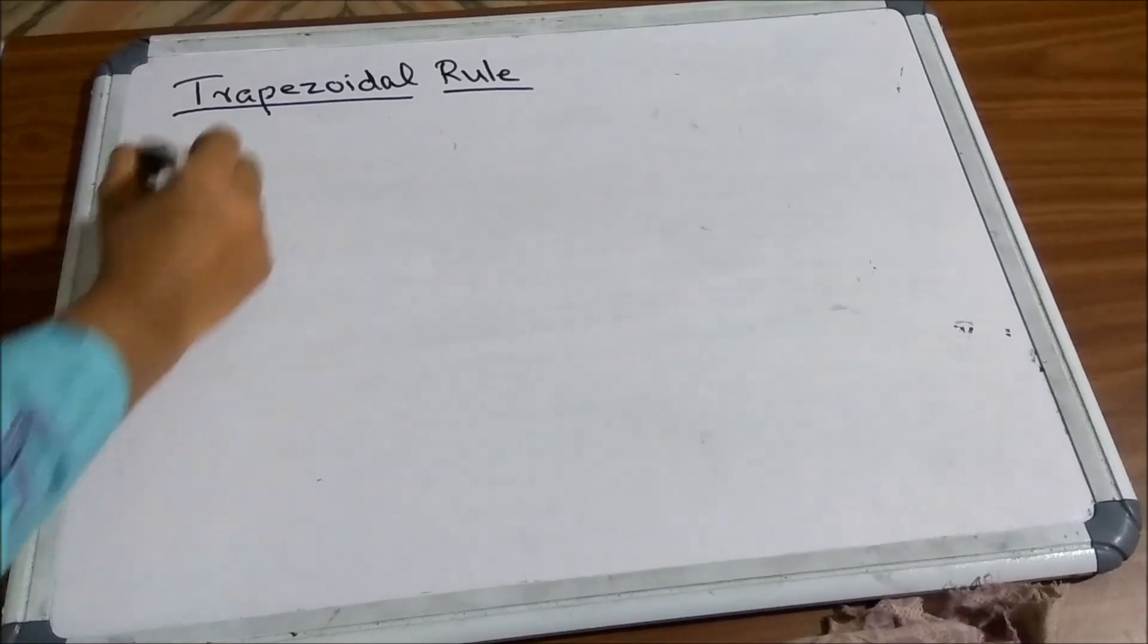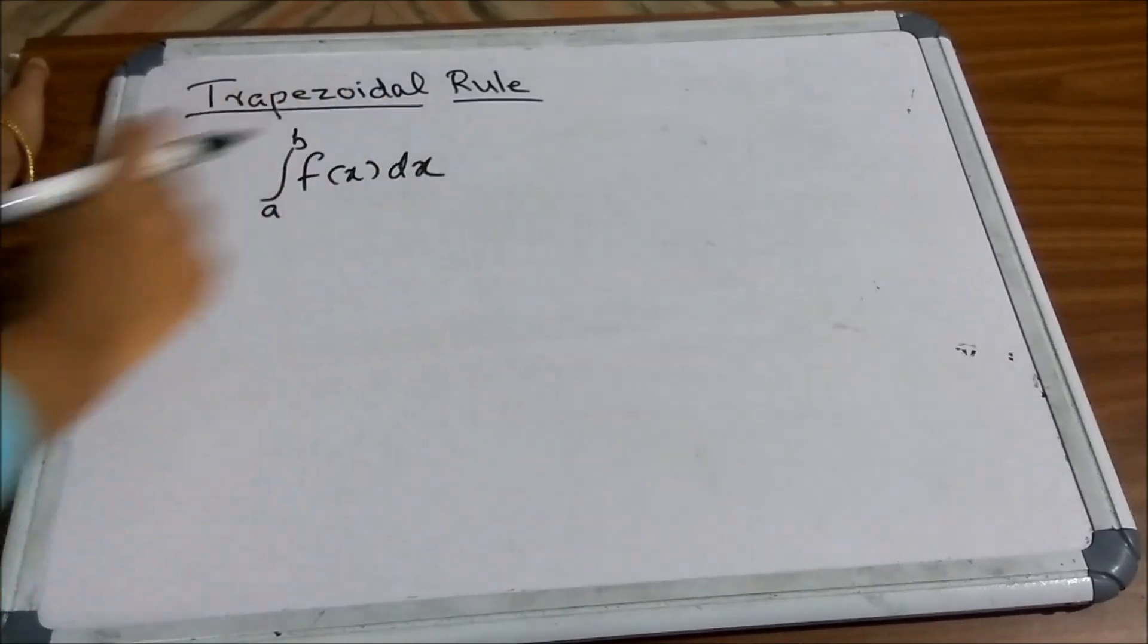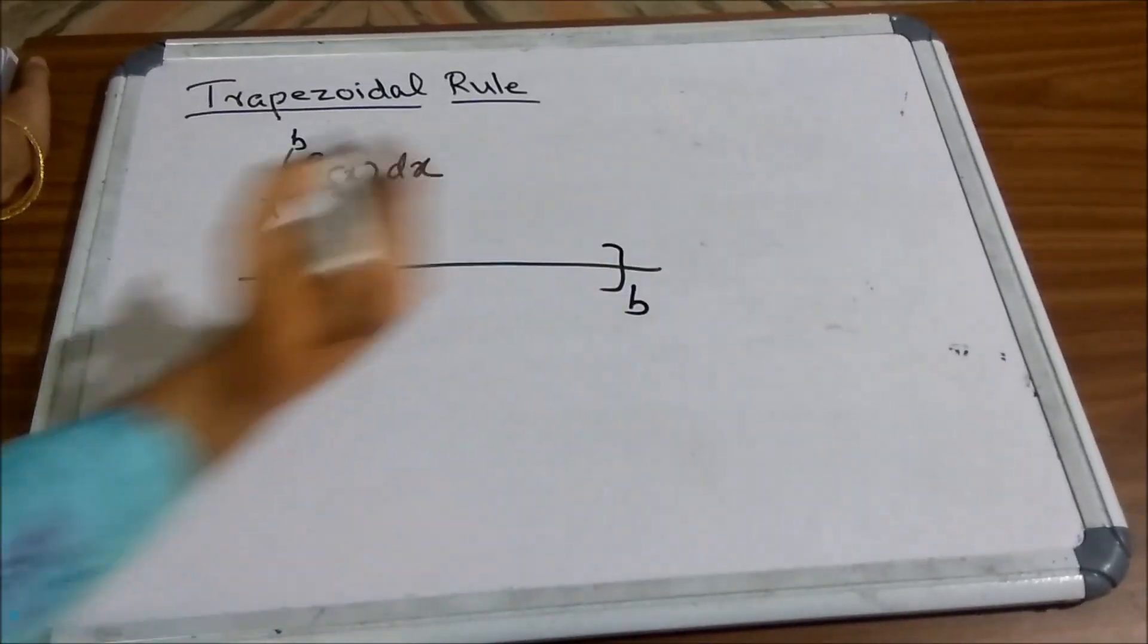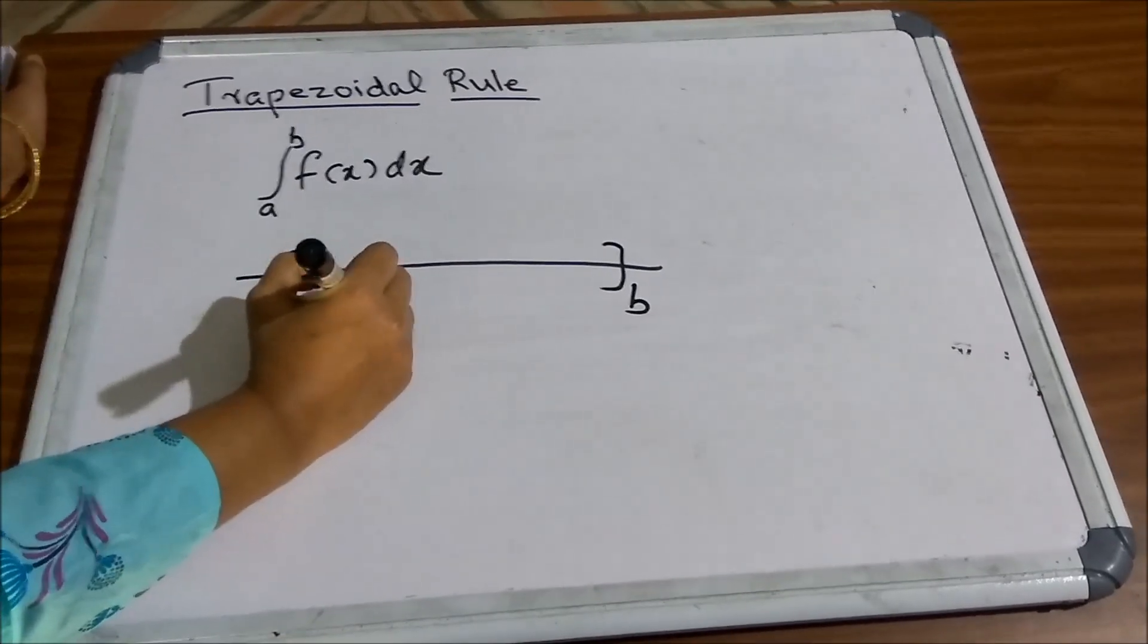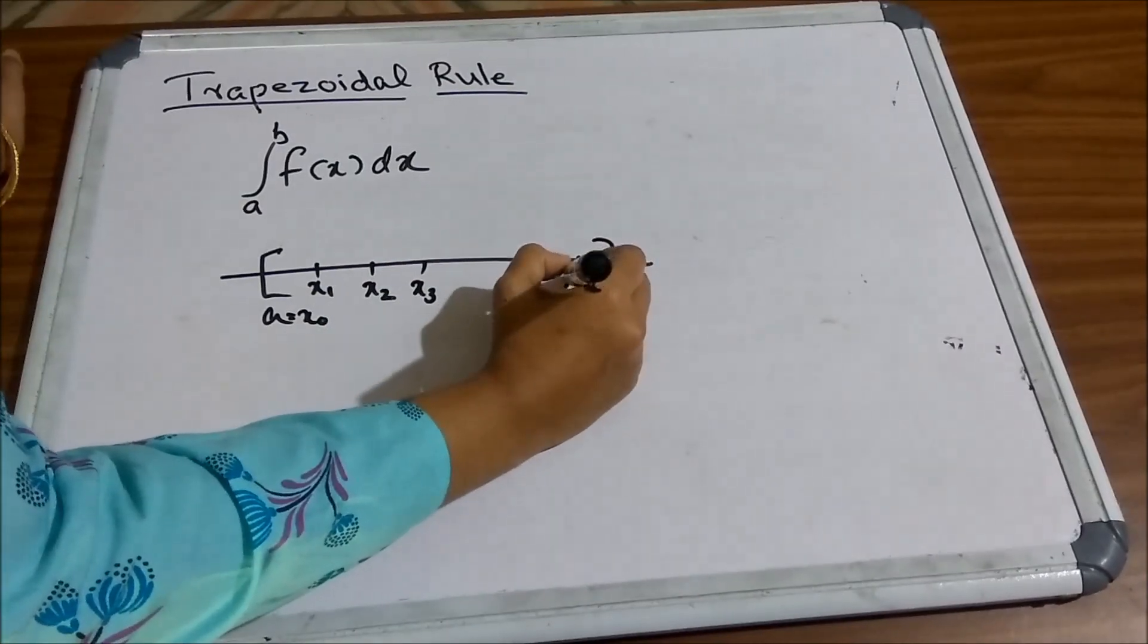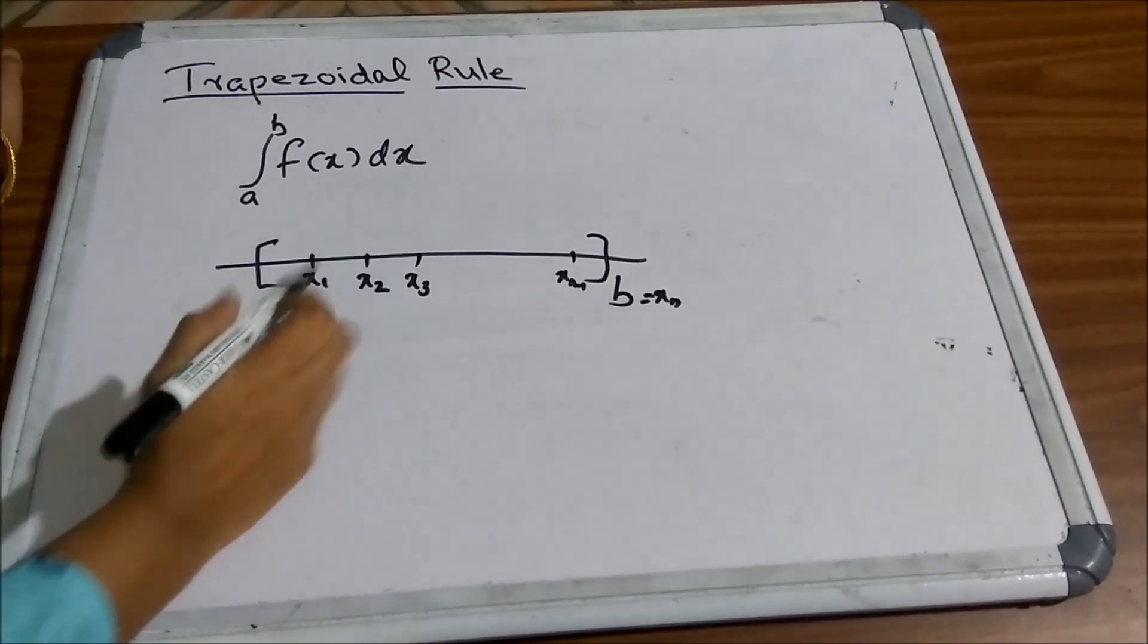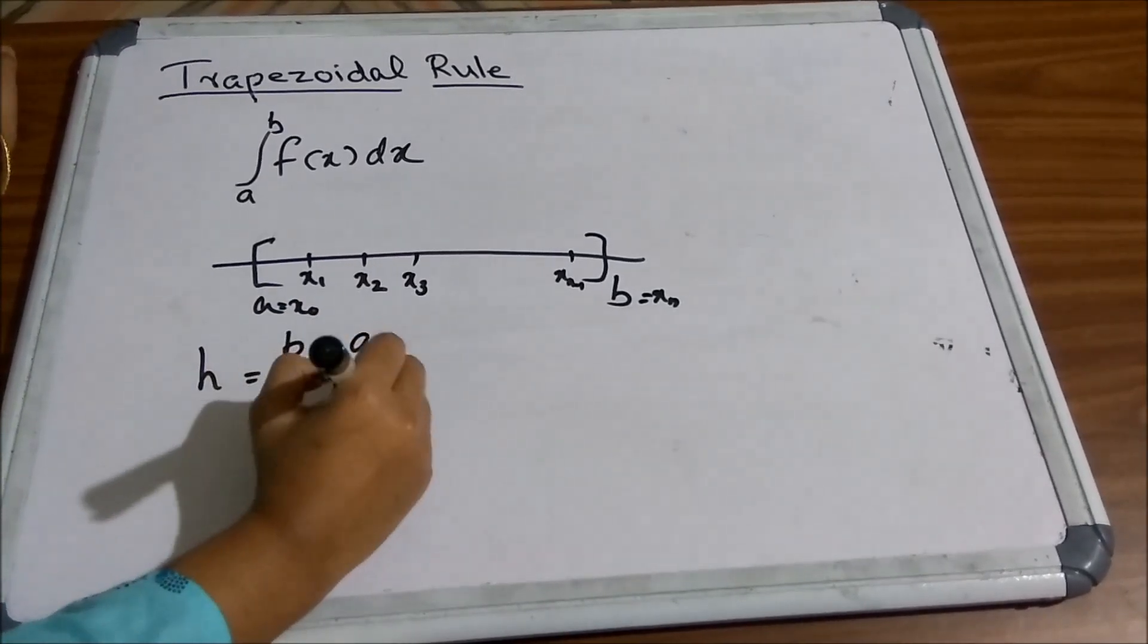To integrate integral a to b f of x dx, first we have to divide the interval a, b into n equal subintervals. So if this is the interval a, b, you can just divide this a, b as a equal to x0, then x1, x2, x3, etc., xn minus 1 and b equal to xn. So you can see that the length of the subinterval h is equal to b minus a by n.